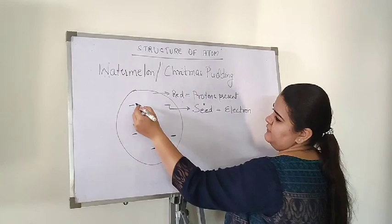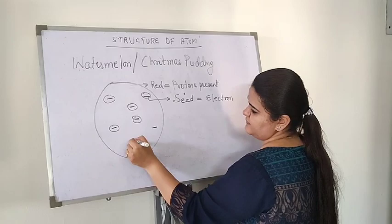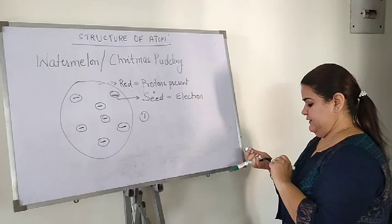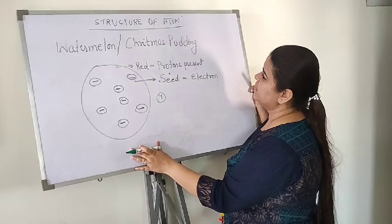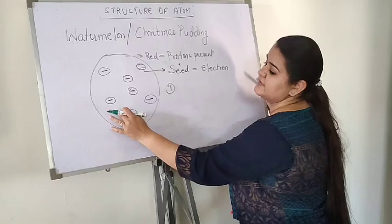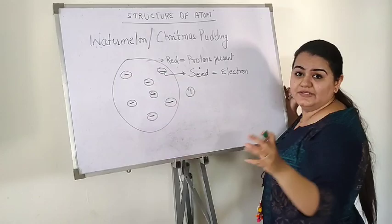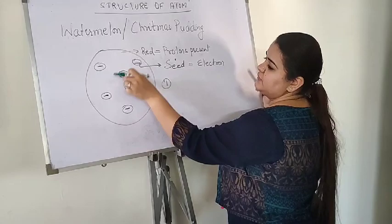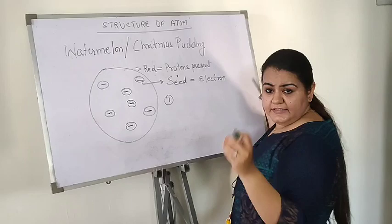Thomson gave two points. First, that most of the structure of an atom is positively charged — that is the red portion of the watermelon — so most of the atom is positively charged with protons present. Whereas, like the seeds of a watermelon, electrons are present only at certain places within the atom. The second point he discussed is that this atom...